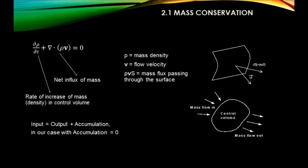Mass flows in and mass flows out through the control volume; whatever stays in has to be equal to the difference in time of the density, and this sum must be zero. Basically, if you have one apple you cannot just pop up another apple by magic - input must equal output, no accumulation in the control volume. Here rho is density and v is the velocity of the flow.